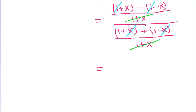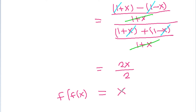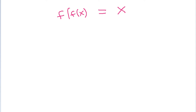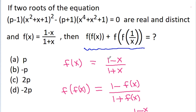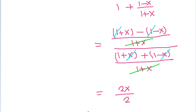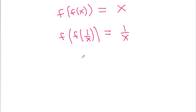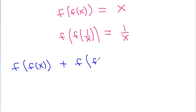After simplification, we get 2x/2, so f(f(x)) is equal to x. And if we replace x by 1/x, then we get f(f(1/x)) is equal to 1/x. So we have to find the value of f(f(x)) plus f(f(1/x)), which equals x plus 1/x.